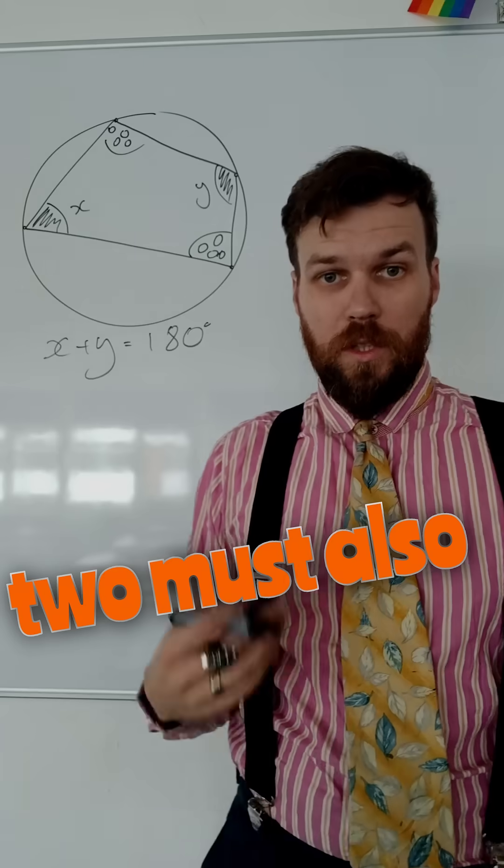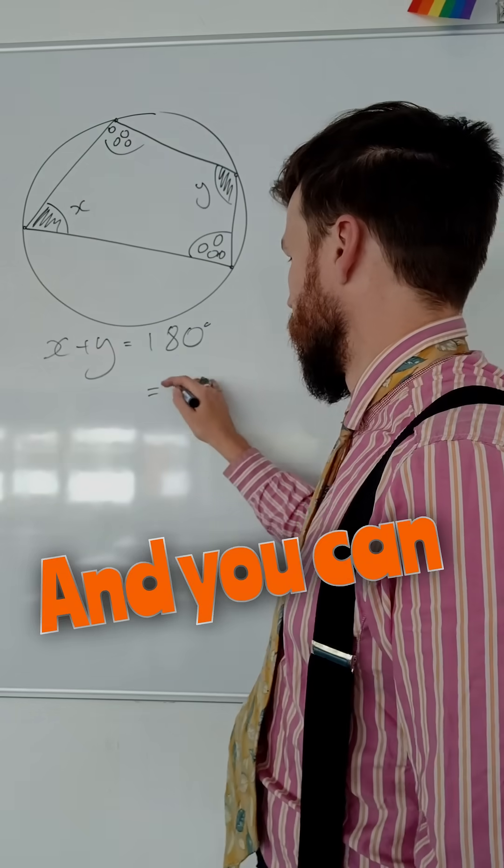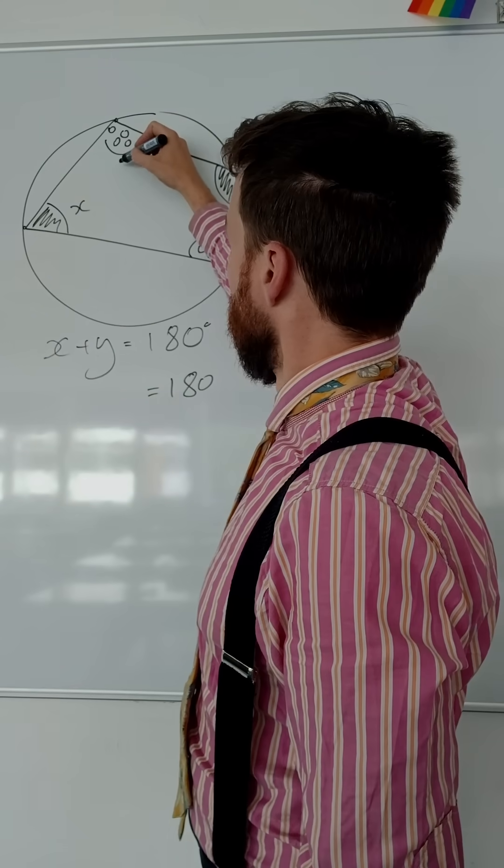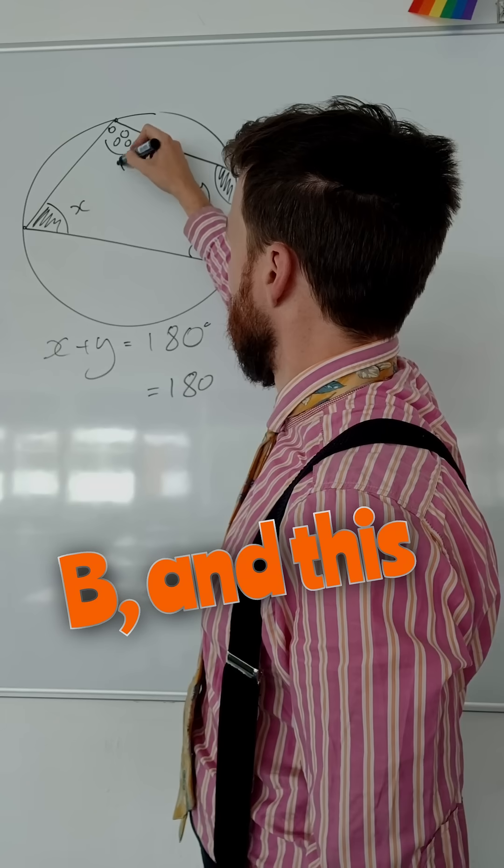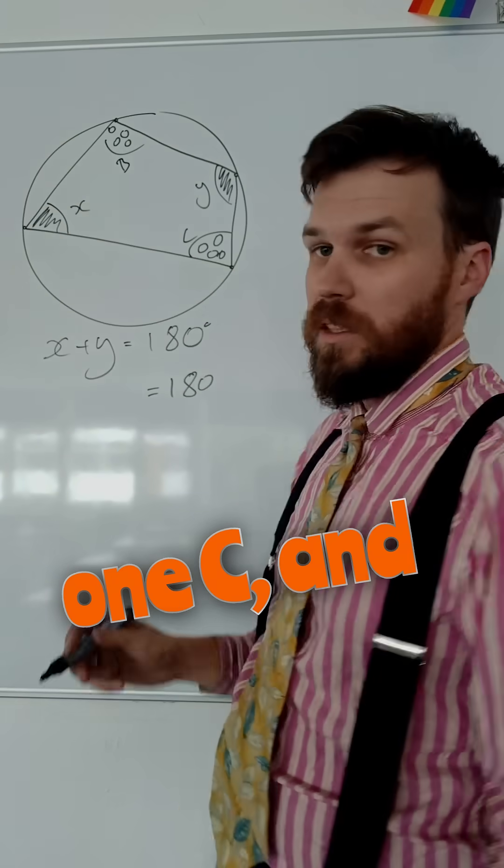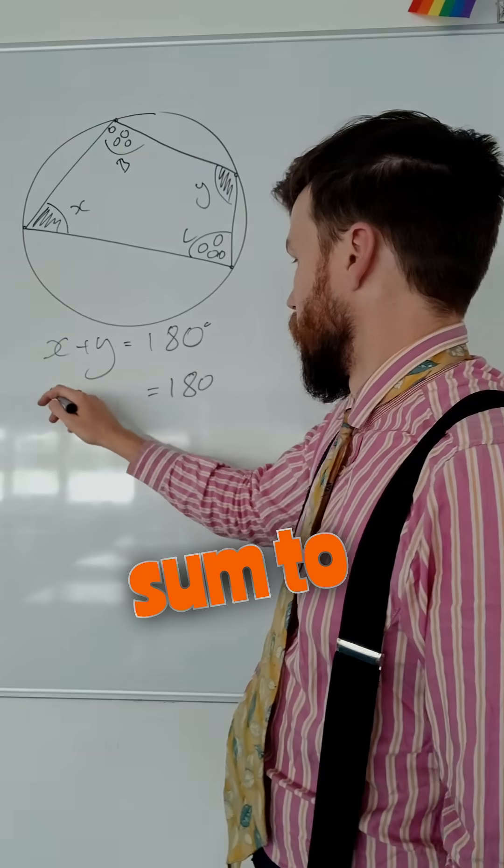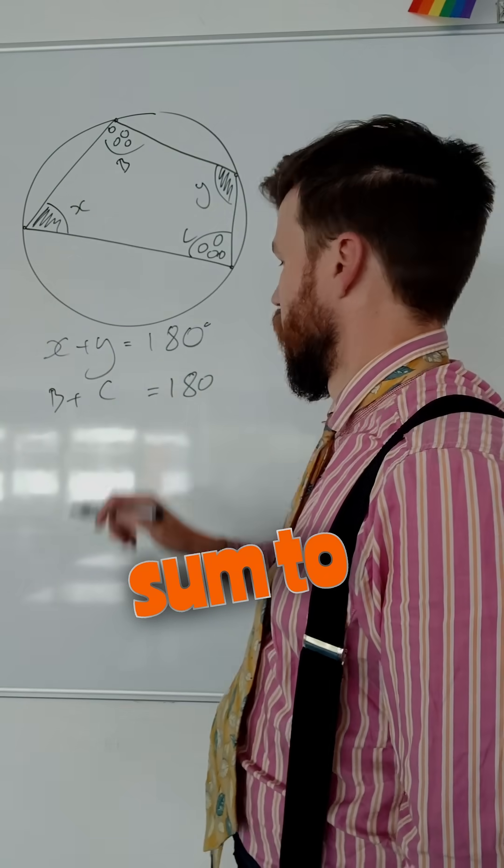These two must also sum to 180, and you can call them whatever you want. I can call this one b, and this one c, and they will both sum to 180.